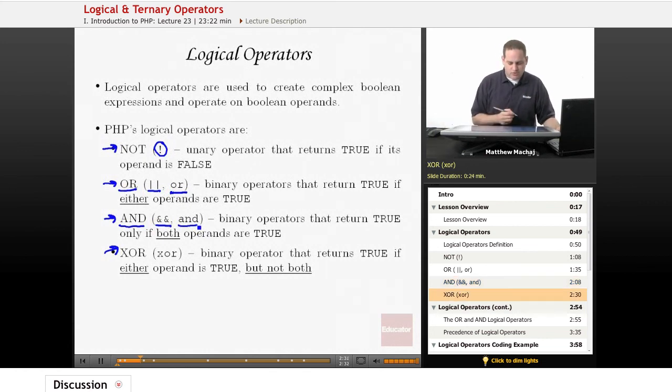Finally, there's the xor operator, which is known as the exclusive or operator. It's a binary operator that's similar to the or operator. It returns true if either one of its operands are true, but not if they're both true. So it's an exclusive or - it can only be one or the other.